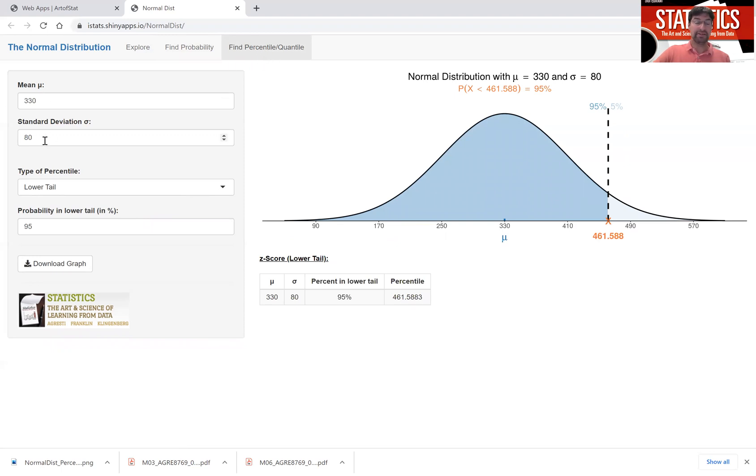You'll still have the same mean and standard deviation. And we look at the probability of 95% in the lower tail. And then we get actually our percentile of 462. So the 95th percentile is 462. We could have gone to the upper tail, find the percentile of the upper tail and say, put 5% in the upper tail, and then we get the exact same answer.